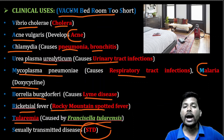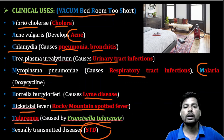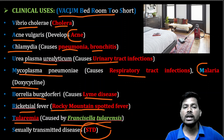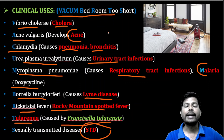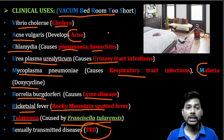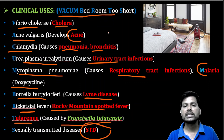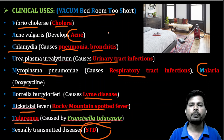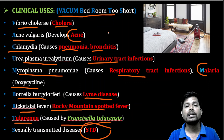The mnemonic trick is 'vacuum bedroom too short.' You can observe that all the initial letters of the clinical uses correspond to this trick. As you know, tetracycline acts by binding to 30S ribosomal subunits and inhibits protein synthesis in the bacterium.